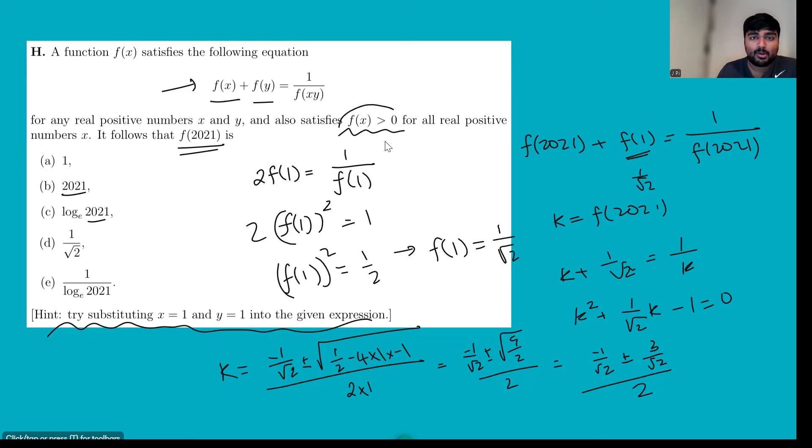f(x) is positive, so we know k must be positive, so we can ignore the negative solution. So it's minus 1 over root 2 plus 3 over root 2. That's 2 over root 2, and then divided by 2, that gives us 1 over root 2. So the answer is d, 1 over root 2.